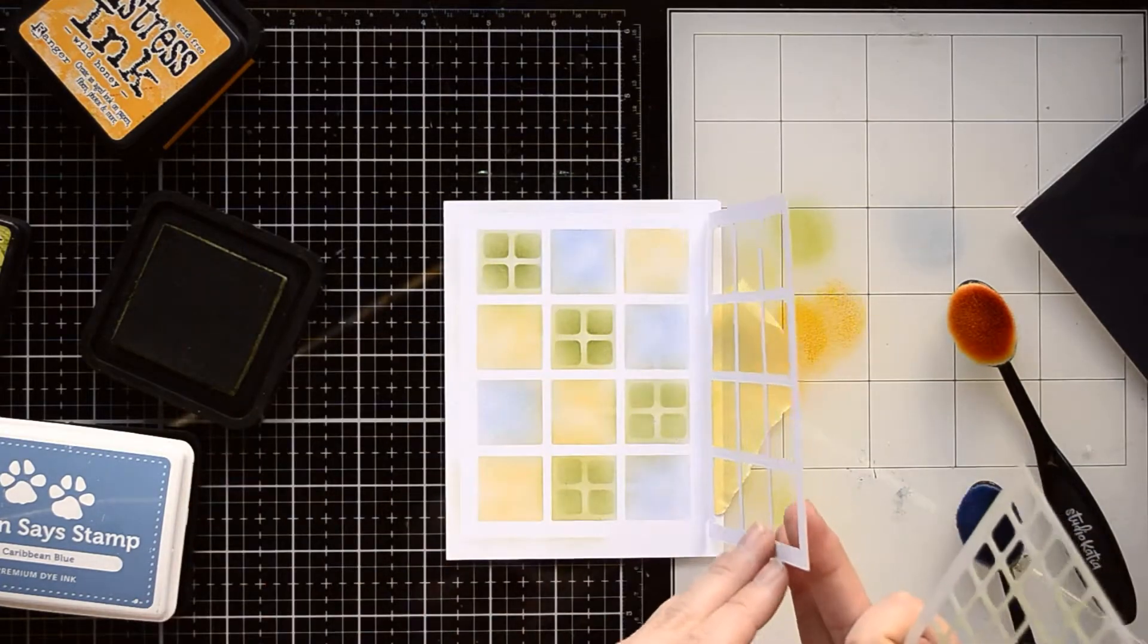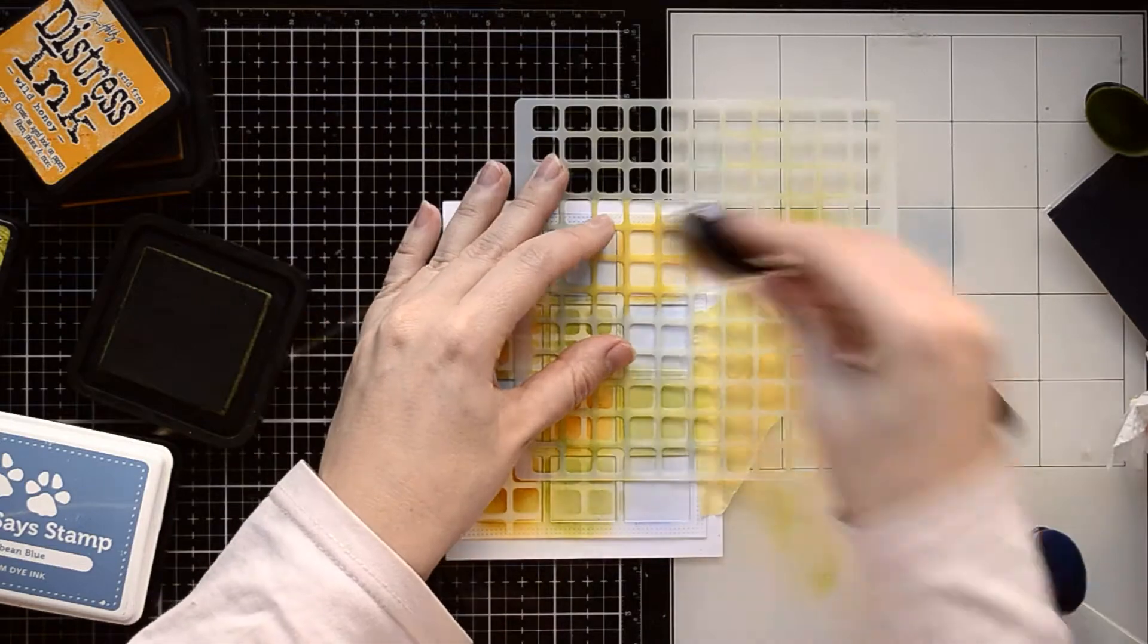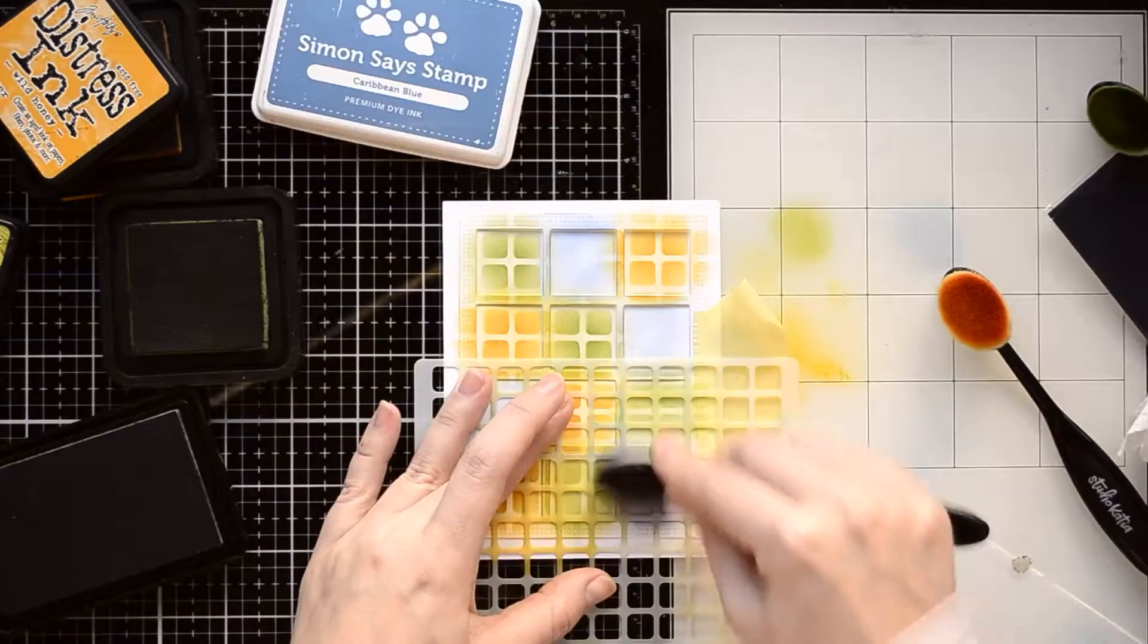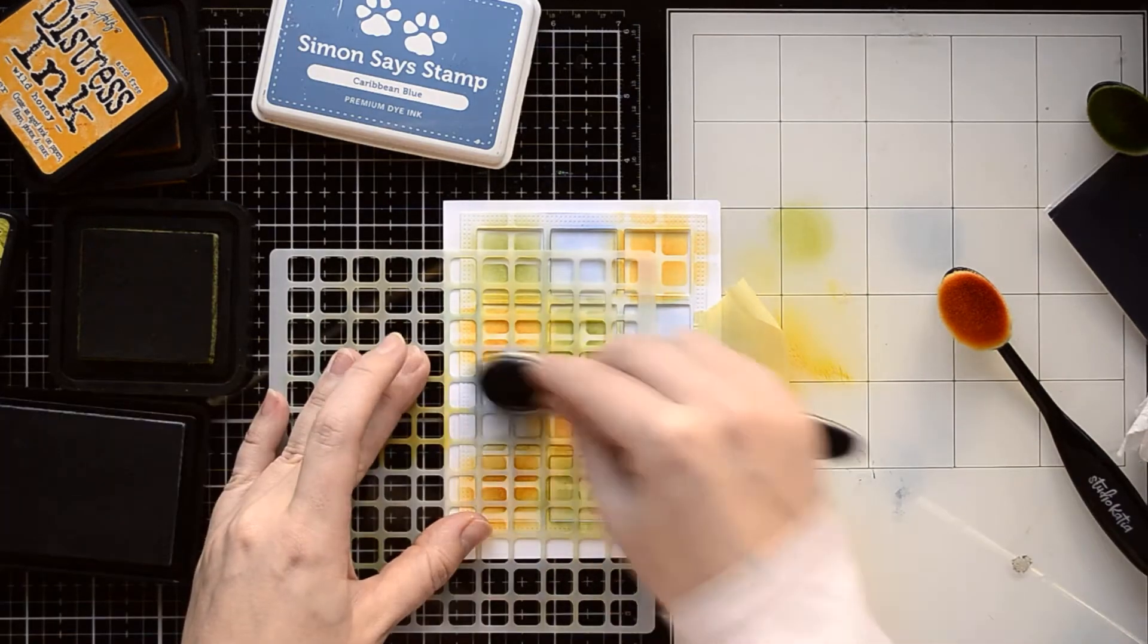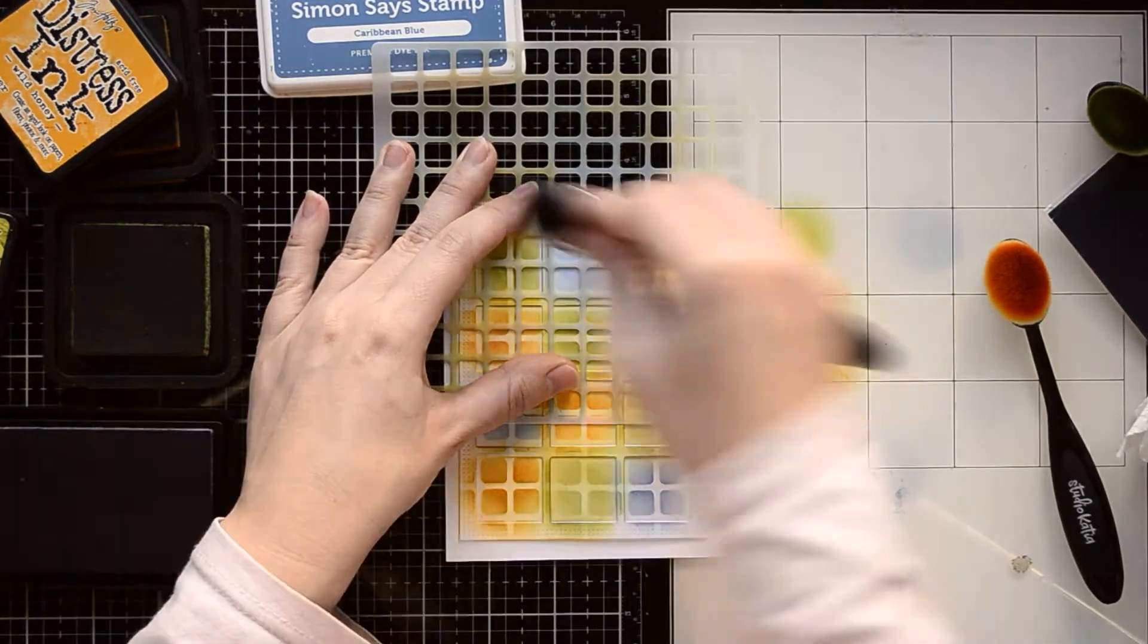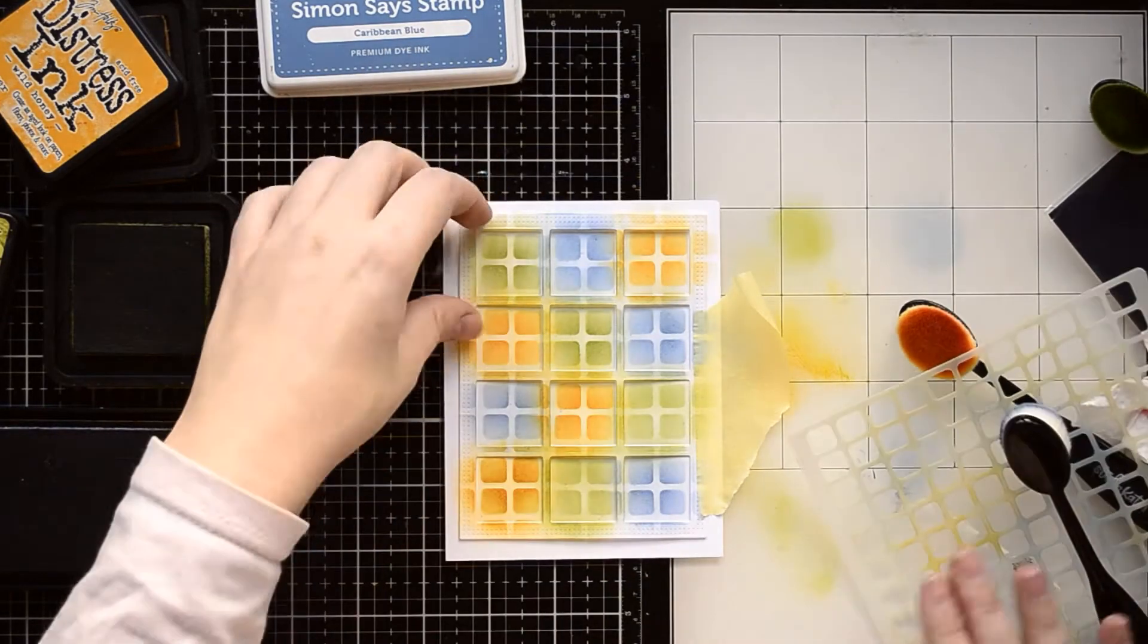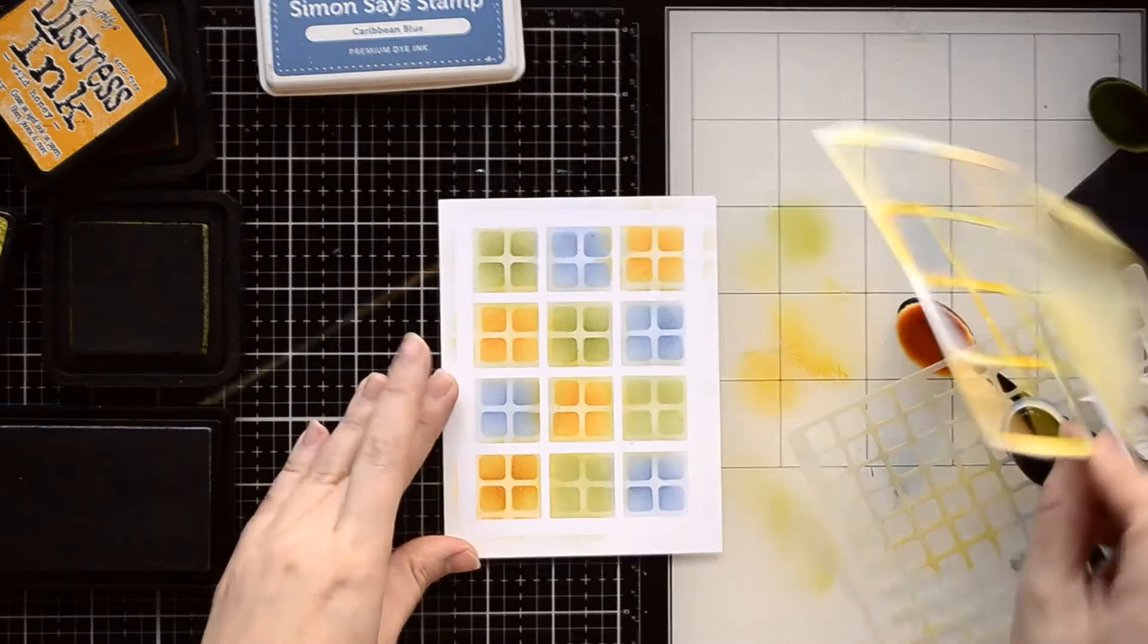Next I left the die cut as is and I covered the card panel with a square brick stencil. I'm going to use only a small part of the stencil and I'm applying only through four little squares on the stencil. And now I'm applying more ink to create a contrast look on the paper. I'm using the same colors for each opening.